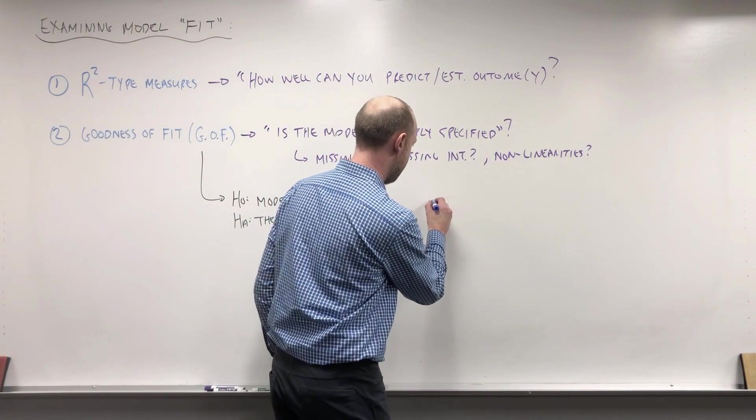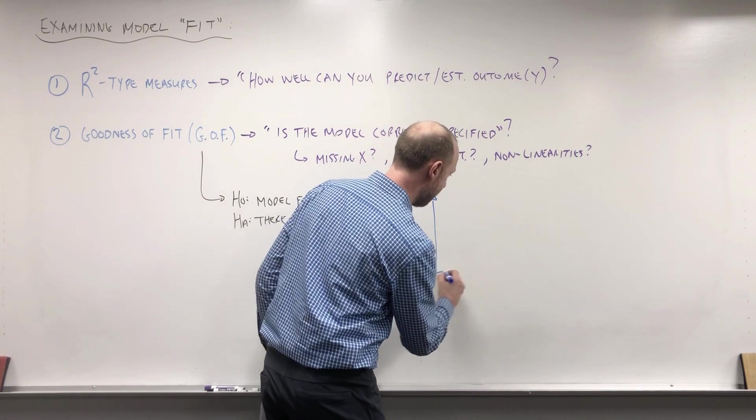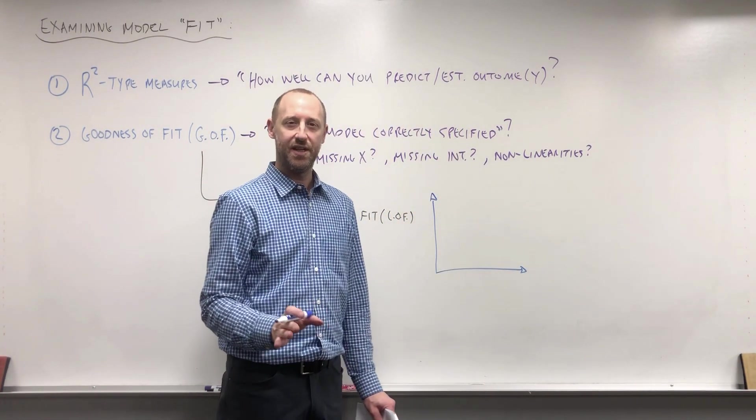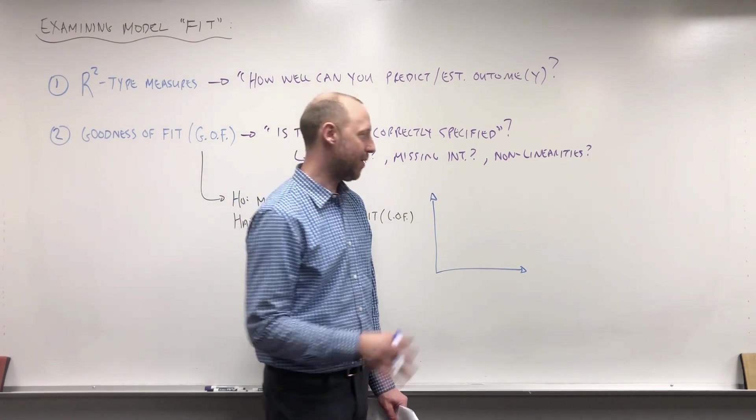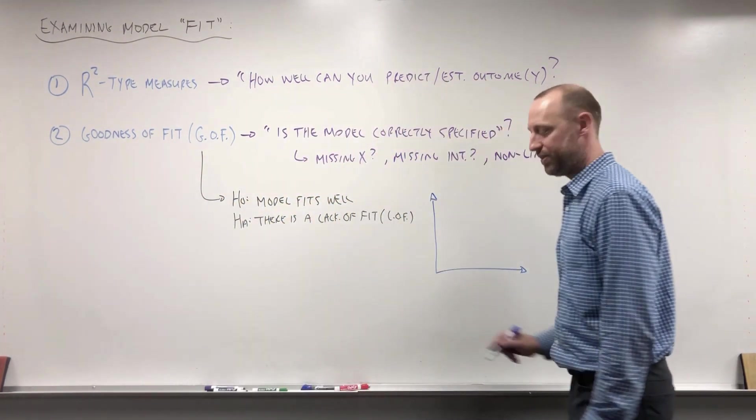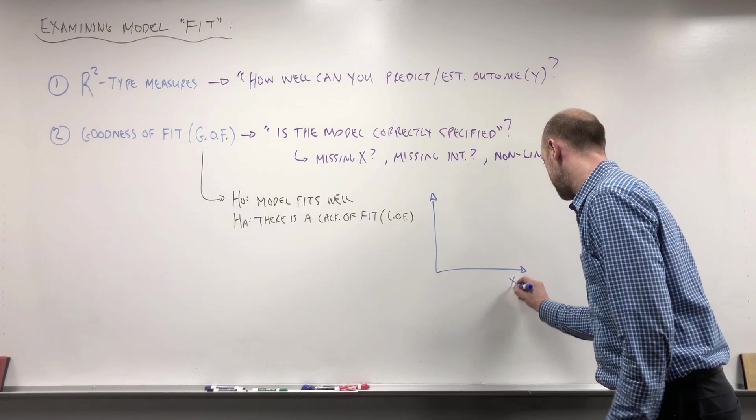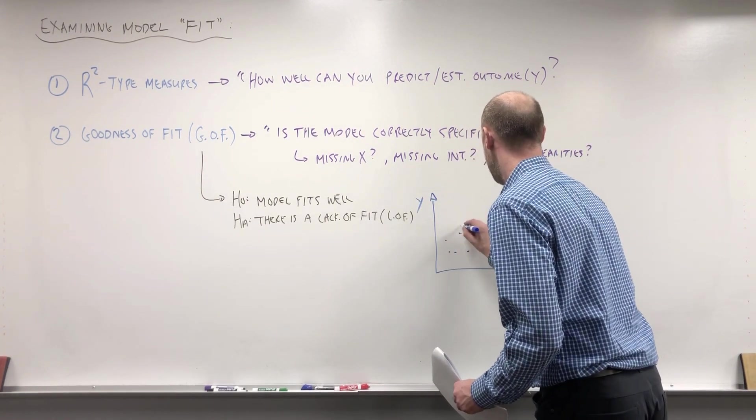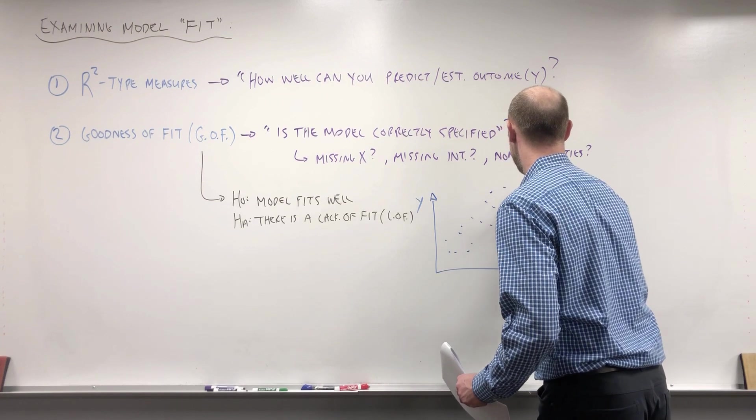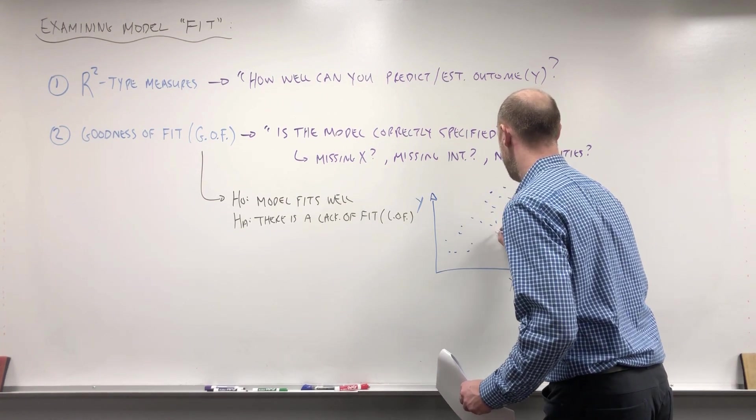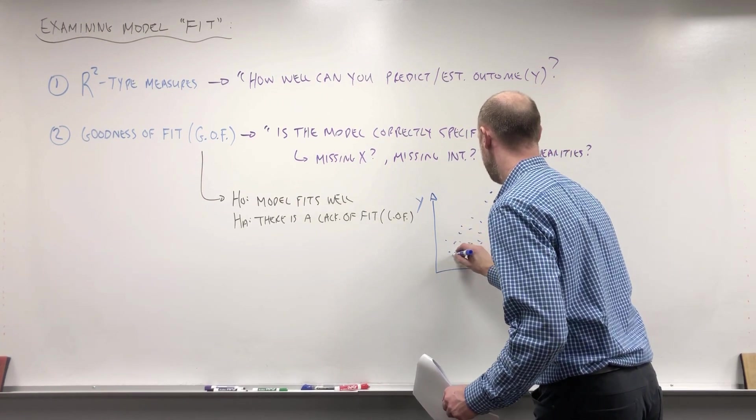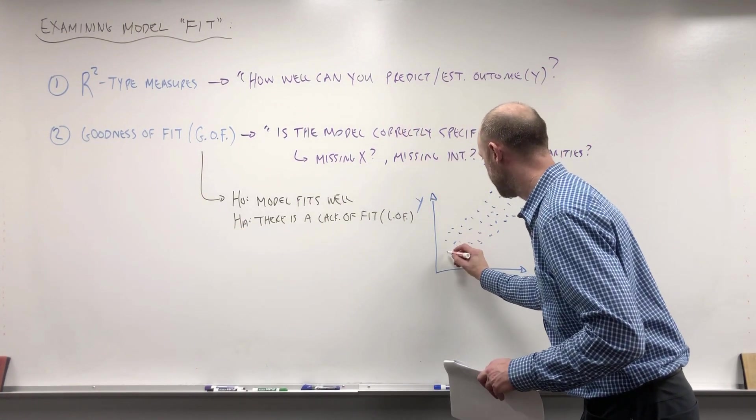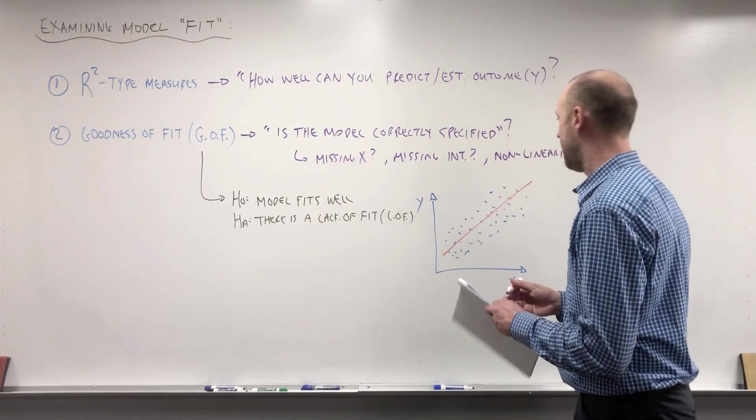I'm going to do it in the context of linear regression just because data for linear regression is easy to draw and visualize to think about, and the concept extends perfectly to logistic. So suppose here's X and here's Y, and here's a scatter plot of the data.